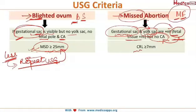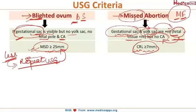To be labeled as a missed abortion, the CRL — that is, the crown rump length — should be more than or equal to 7mm. We refer to CRL because fetal tissue has appeared, and fetal tissue is measured in terms of crown rump length.